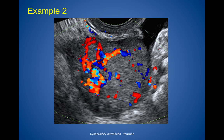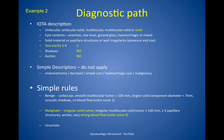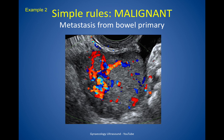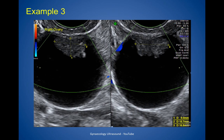Here's another example. On IOTA description it's a solid lesion with strong vascularity, no shadowing, no ascites. The simple descriptors do not apply. On simple rules it's malignant because it's an irregular solid lesion with strong blood flow. There were no benign features so it must be malignant, and it was — it was a metastasis from a bowel primary.